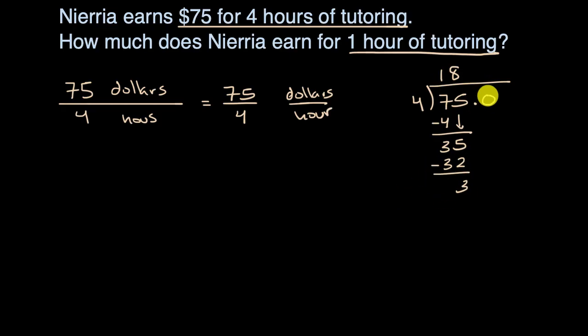Well, now I'm going to get some decimals here. So let me bring down a zero. Four goes into 30 seven times. Seven times four is 28. Subtract and then I get a two. Bring down another zero. Four goes into 20 five times. Five times four is 20 and I am done.